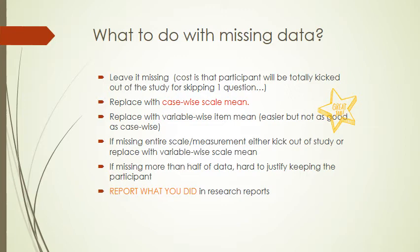This is considered the best way to estimate missing data because it is case-wise — by individual person. Another way is to do a variable-wise mean. This is easier; SPSS will do it in a quick click and you don't have to hand-calculate it. But it's not as good because it uses the sample's mean rather than that individual person's mean. So it's okay, but it's second best.